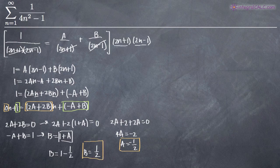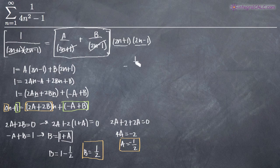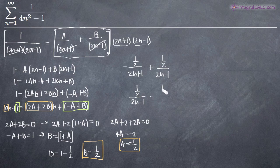Now that we're finished with our partial fractions decomposition, we can plug A and B back into our equation. Substituting A equals negative 1 half and B equals 1 half, we get negative 1 half over 2n plus 1 plus 1 half over 2n minus 1. Flipping the order so we don't lead with a negative, this becomes 1 half over 2n minus 1 minus 1 half over 2n plus 1. This is our series S sub n.